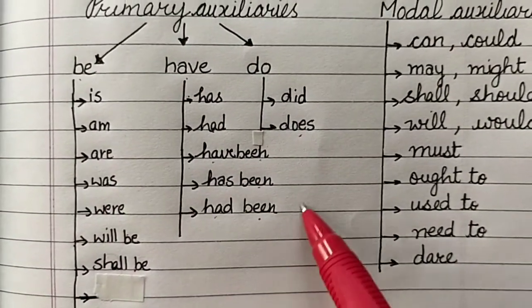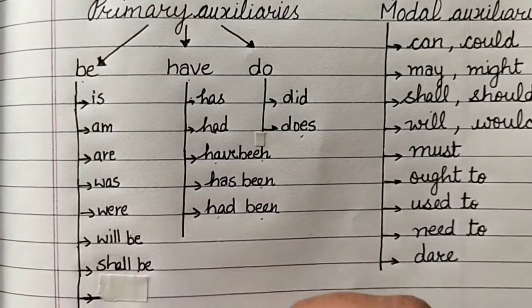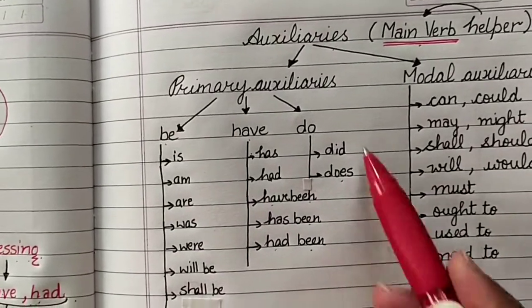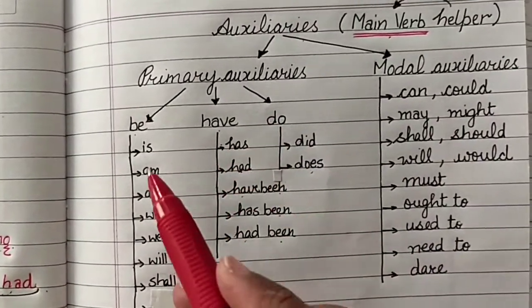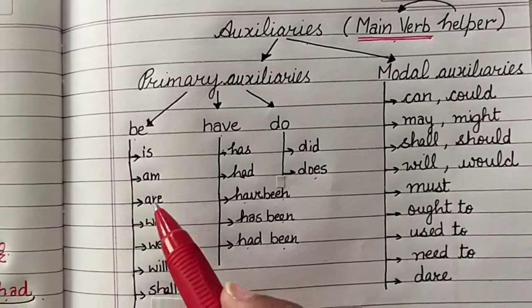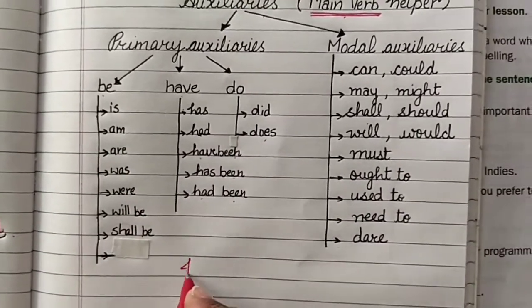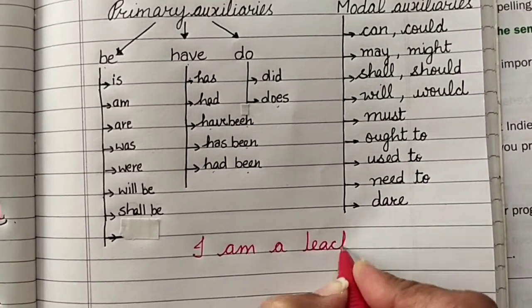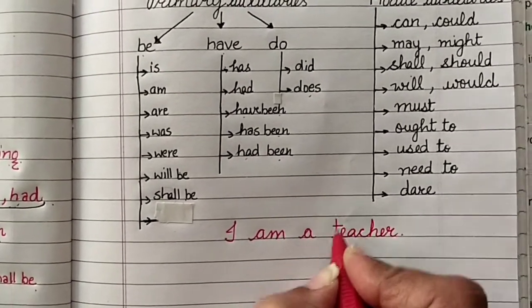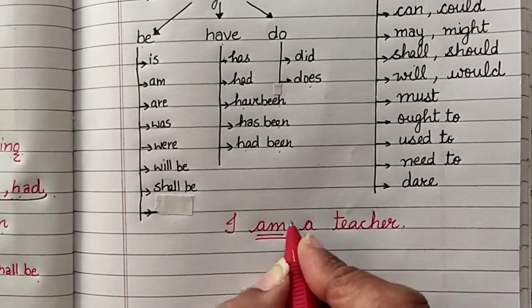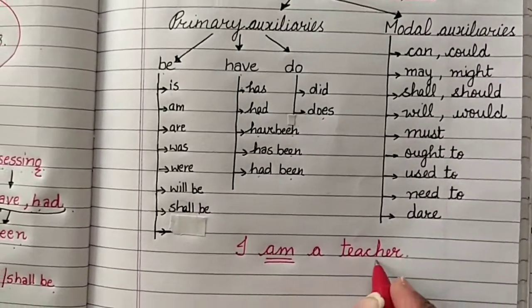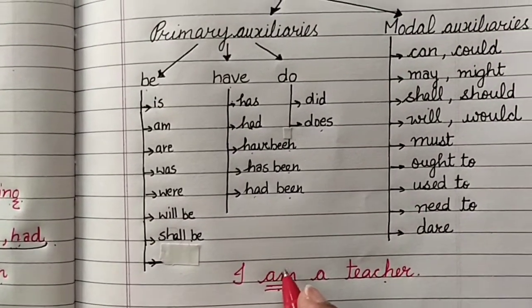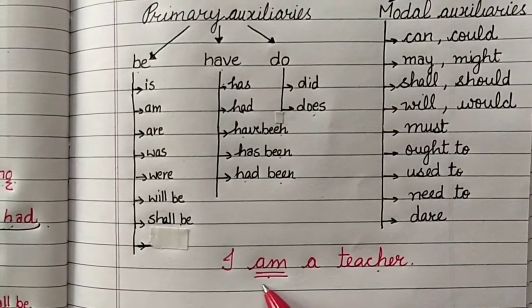All these are when working as a helper to the main verb, they are primary auxiliaries. And why are they primary auxiliaries? Sometimes, they could be used in itself. Like when I say I am a teacher. So here, there is no main verb and it is completing itself on its own in a sentence. My being is shown. So it can be used in itself also. So that is why it is called primary auxiliaries.